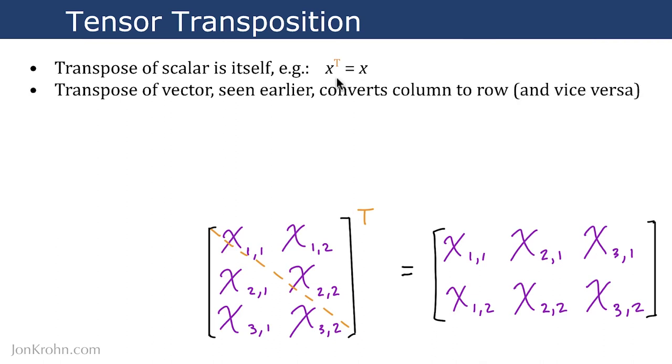The transpose of a vector, we've actually already seen this earlier in the Machine Learning Foundation series. This converts a column vector to a row vector, and vice versa.